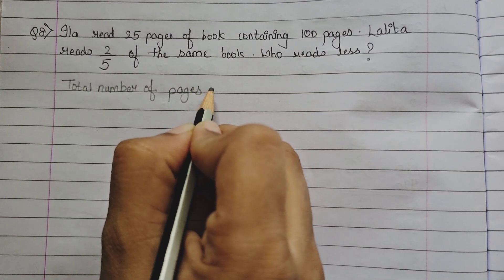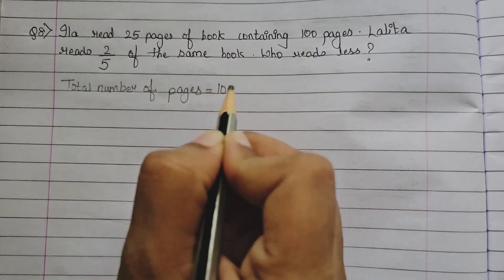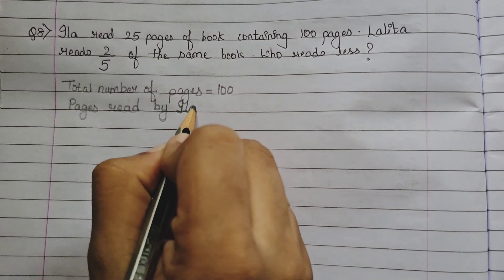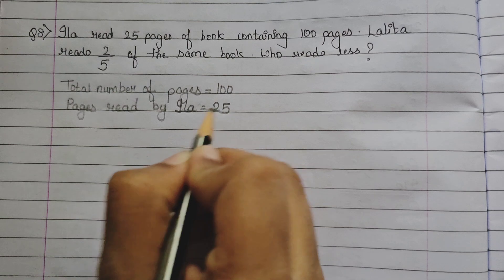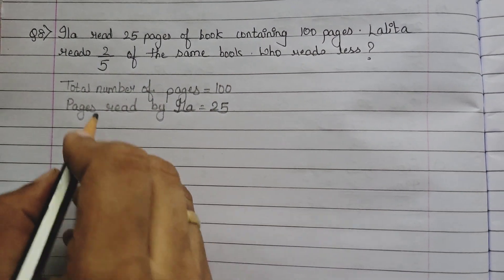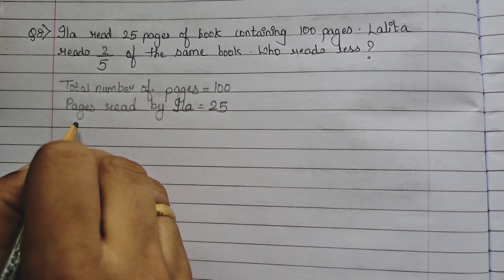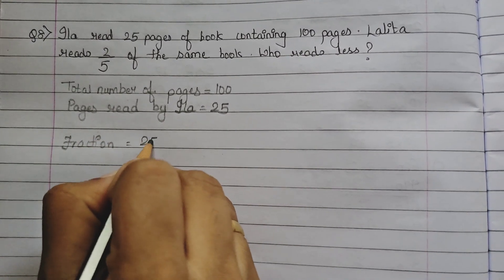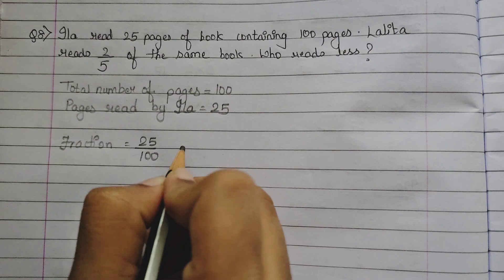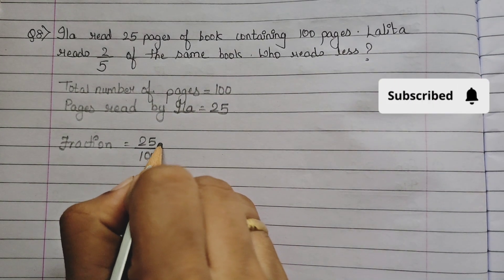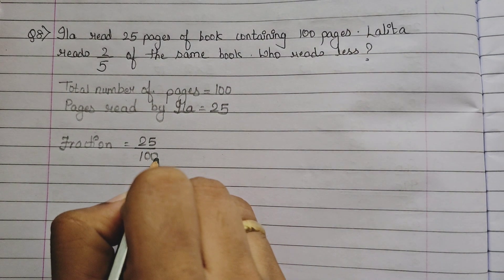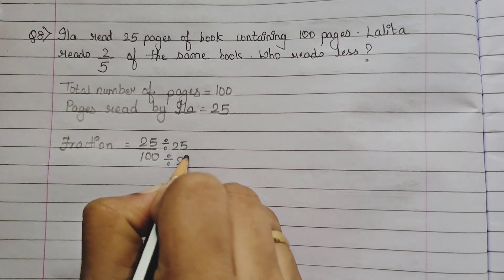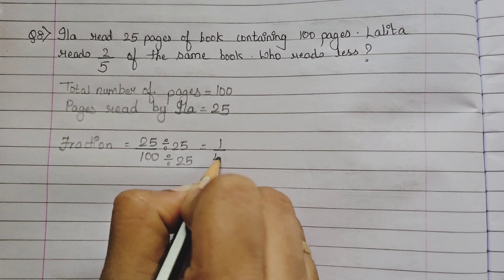So, what is the total number of pages? 100. And how many pages did she read? 25. So, what will be the fraction for the pages read by Ila? So, you have to find the lowest form. What you observe, 25 and 100 both go in the table of 25. So, divide, so the answer is 1 upon 4.